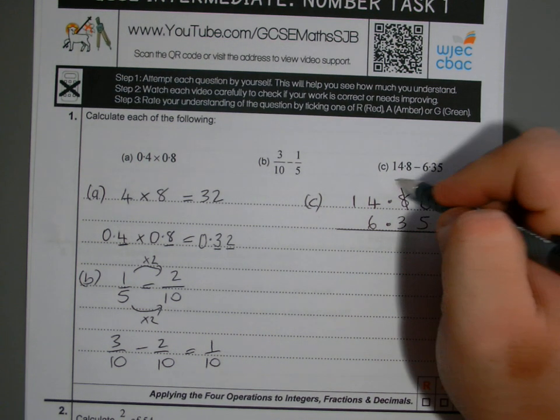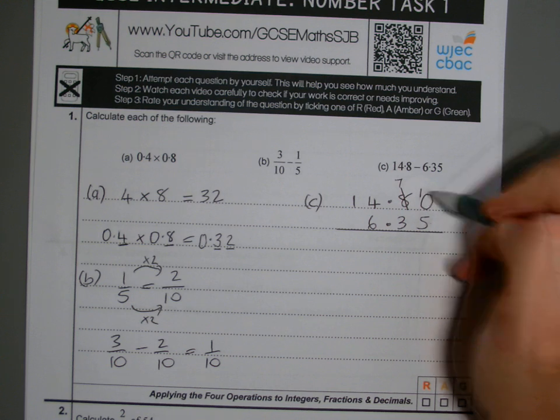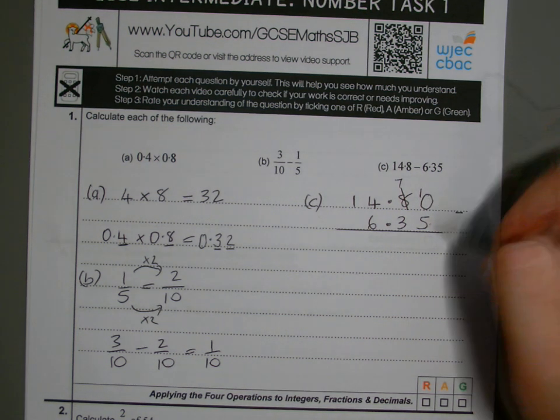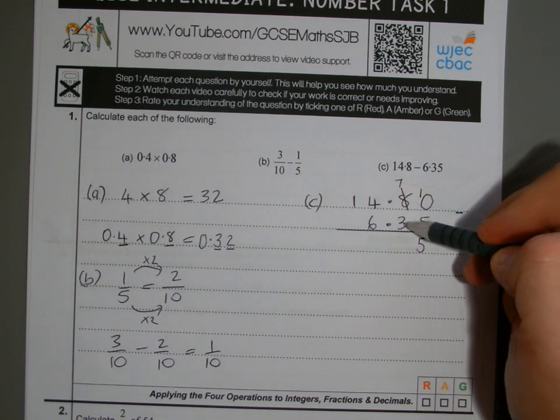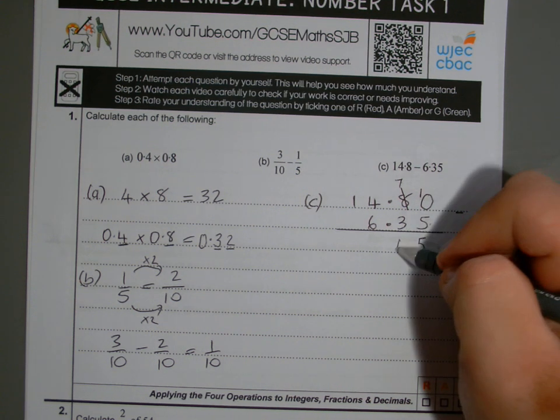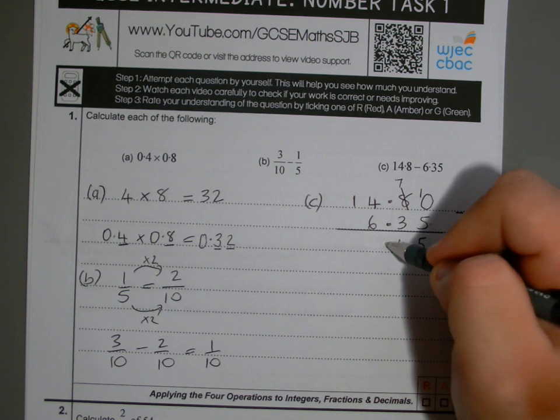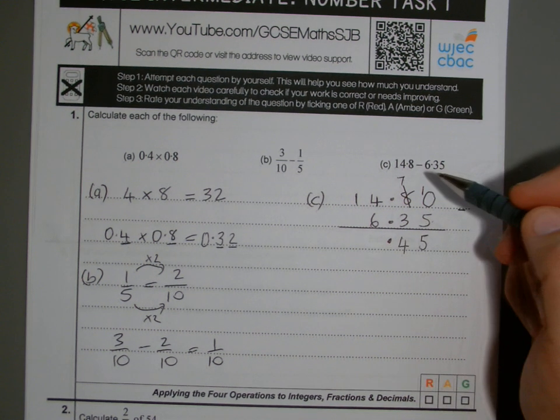And if I borrow from the 8, it becomes a 7, and the 1 I borrow, I place here. So then 10 take away 5 I've got, which works out to be 5. 7 take away 3 there, so I've got 7 now, take away 3 is 4, easy peasy. Remember to line up the decimal points, so we've got that in our answer.